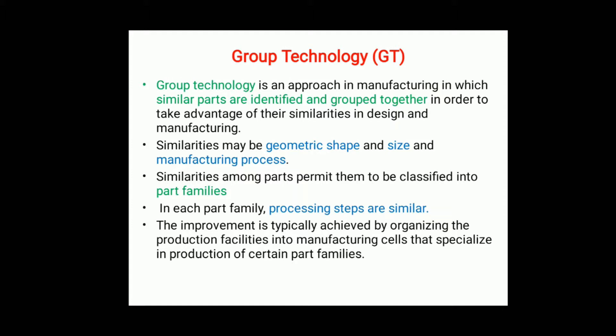Group technology is a manufacturing philosophy in which similar parts are identified and grouped together to take advantage of their similarities in manufacturing and design. Similar parts are arranged into part families. For example, a plant producing ten thousand different part numbers may be able to group the vast majority into 50 or 60 families. Each family possesses similar design and manufacturing characteristics, resulting in manufacturing efficiency in the form of reduced setup time, in-process inventory, better scheduling, improved tool control, and use of standardized process plans.